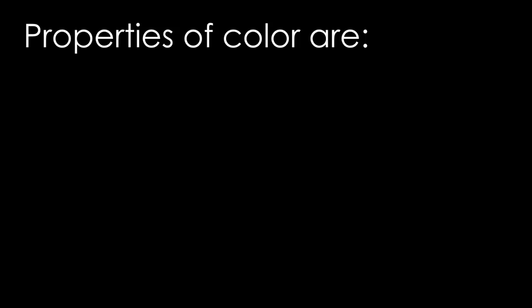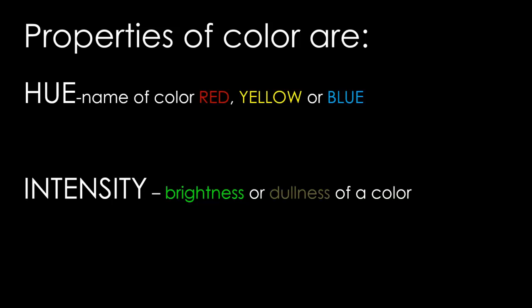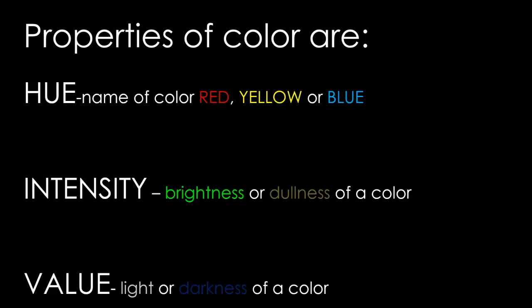There are three properties of color. The three properties include hue, which is the name of a color such as red, yellow, or blue or green; intensity, which refers to how bright or how dull a color is; and value, which is how light or dark a color is.